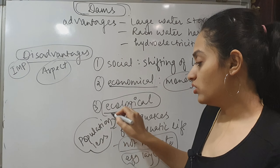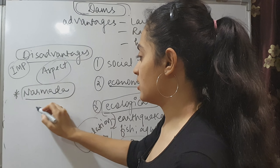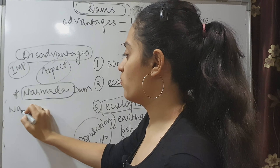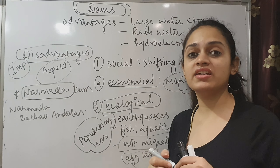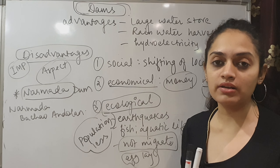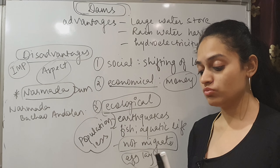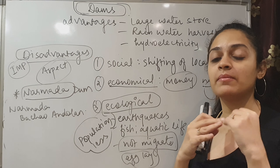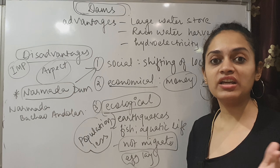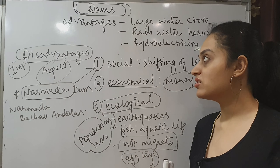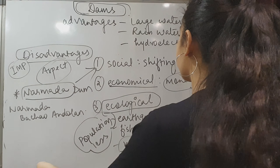One controversial dam is the Narmada Dam. There is a movement called 'Narmada Bachao Andolan' — save the Narmada. The dam needs to increase in height, which impacts other people's land and displacement. This is a social issue that has been going on for many years — eight to nine years. So we have seen the advantages and disadvantages of dams.